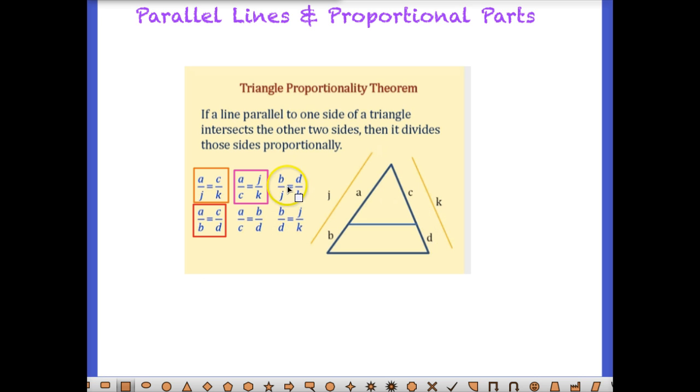How about this one? B over J is equal to D over K. So now again we have a piece over a whole is equal to a piece over a whole. So the proportionality theorem really just says that because these sides are divided proportionally, then we can set up proportions using any ratios we want as long as we make sure that we're comparing the right piece to the right piece or the right whole to the right whole. Let's look at some examples.